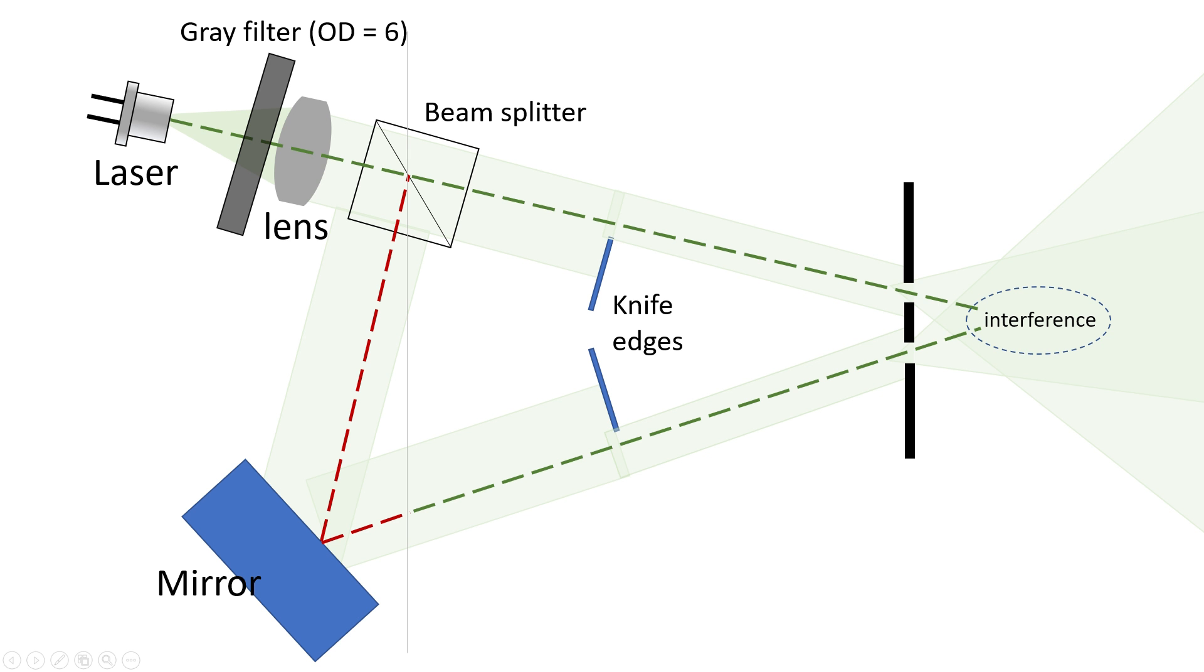For photons, time does not exist. And therefore, there is no such thing as a time between emission, absorption or anything that happens in between, like say reflection, diffraction or interference. For a photon, everything happens in one single instant.